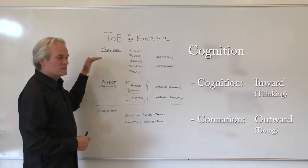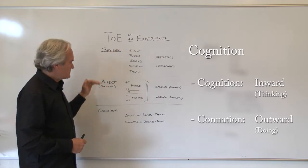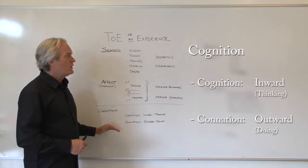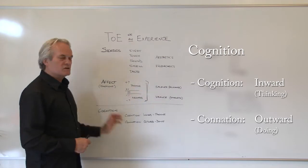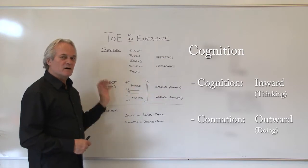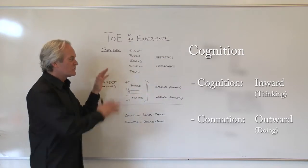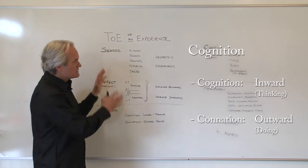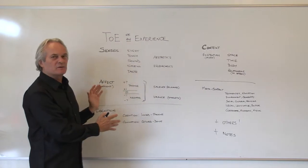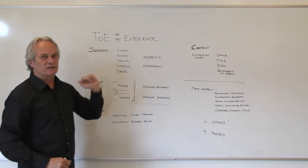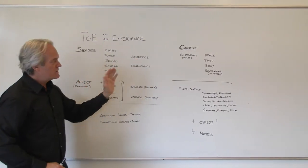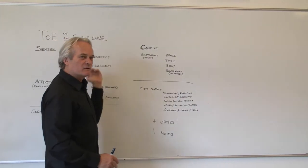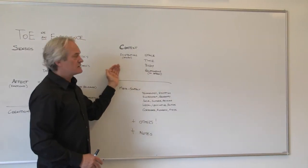In an experience we have the senses, we have the affect, we know there's thinking going on — all of this takes place in my mind, in my head, it's all happening within me. But none of that can take place unless we have a context, so we have to understand how all of that takes place within the context.